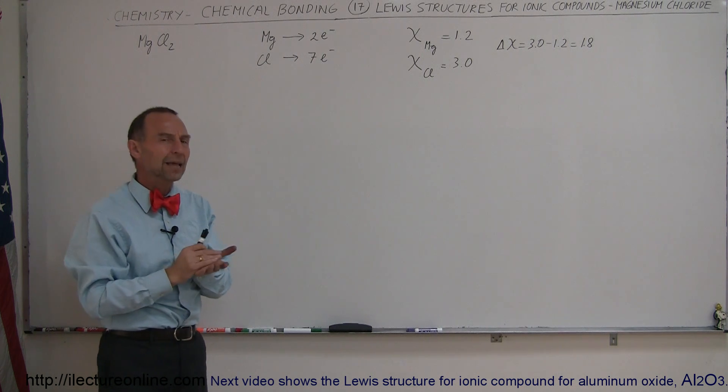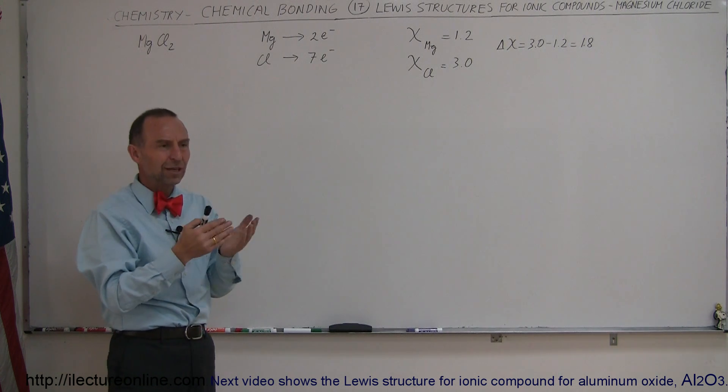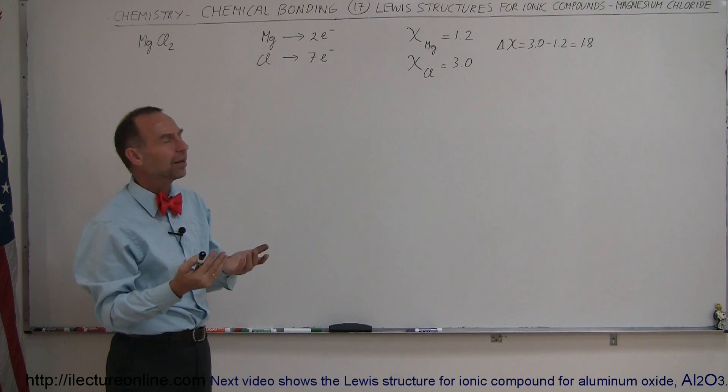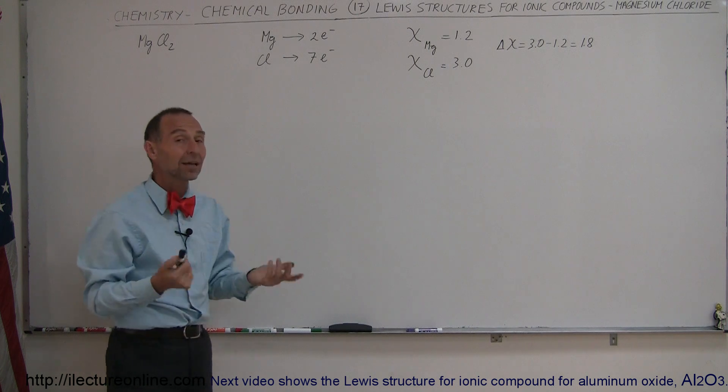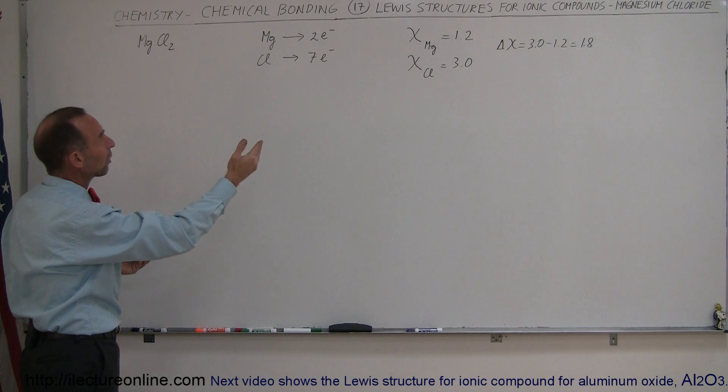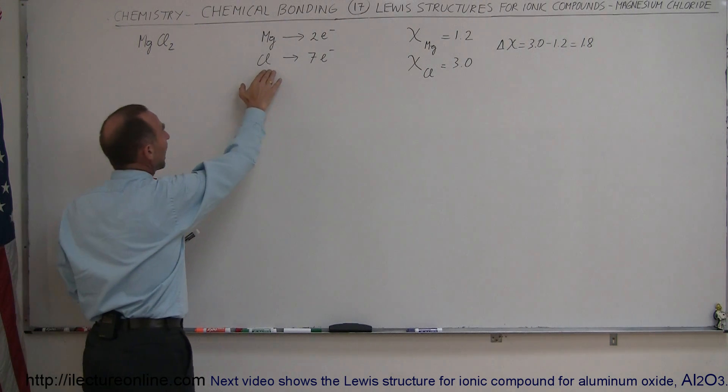Well, it's kind of a borderline case. The number two difference is kind of a rule of thumb. But 1.8 still makes it fairly ionic, and so we can think of this as an ionic compound. So what's going to happen is magnesium is going to donate two electrons, one to each of the chlorine atoms.